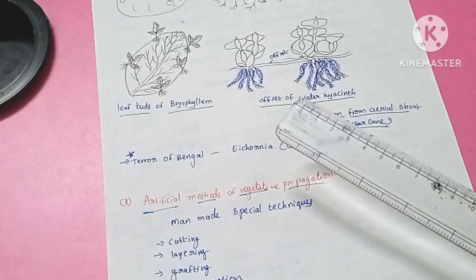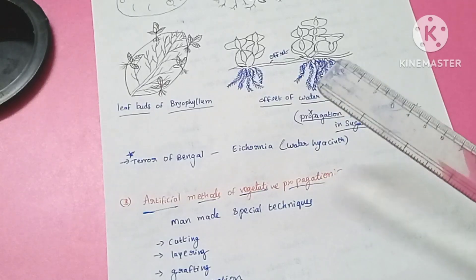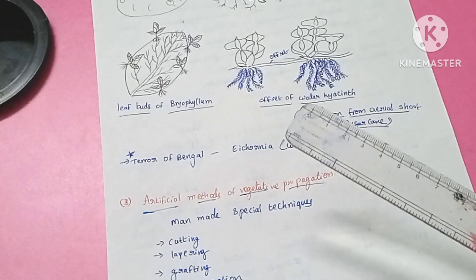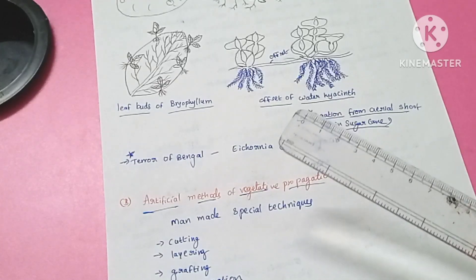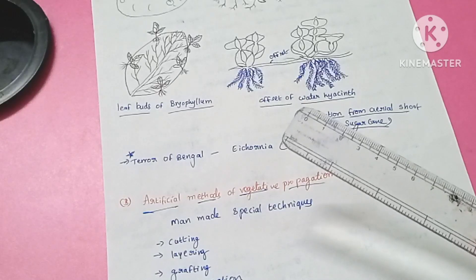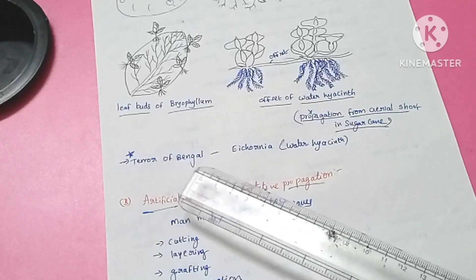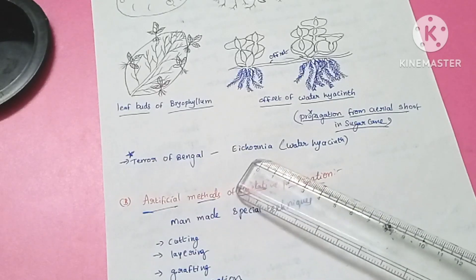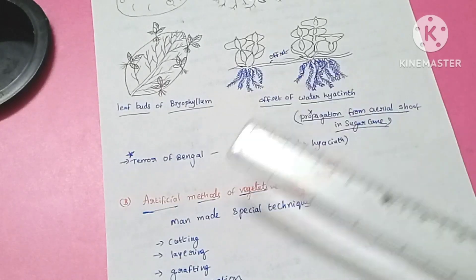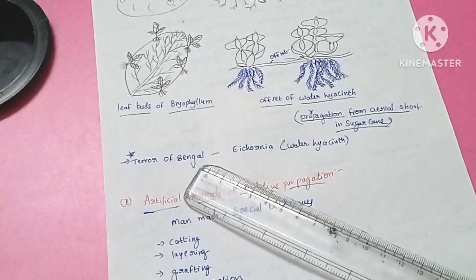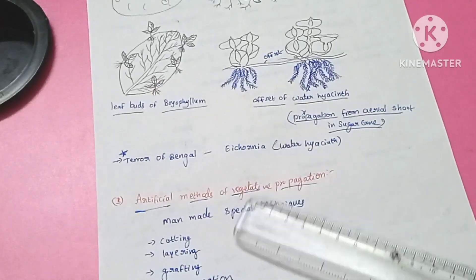Eichhornia, commonly called water hyacinth, is known as the Terror of Bengal. It was first introduced for its beautiful flowers, but it is a very fast-growing aquatic weed. It drains oxygen from the water, which suffocates aquatic living organisms. In Bengal, where fish is a staple food, the spread of Eichhornia caused fish scarcity — hence it is called the Terror of Bengal.